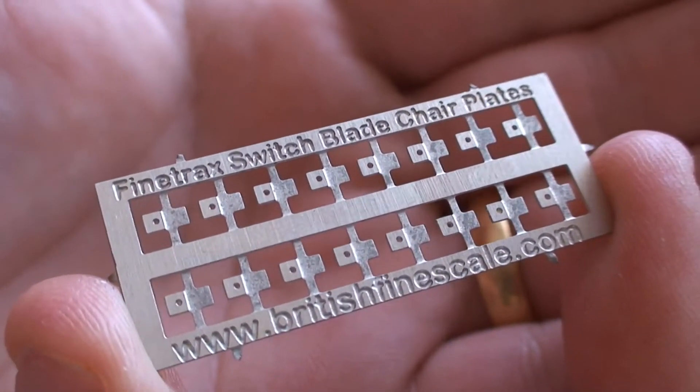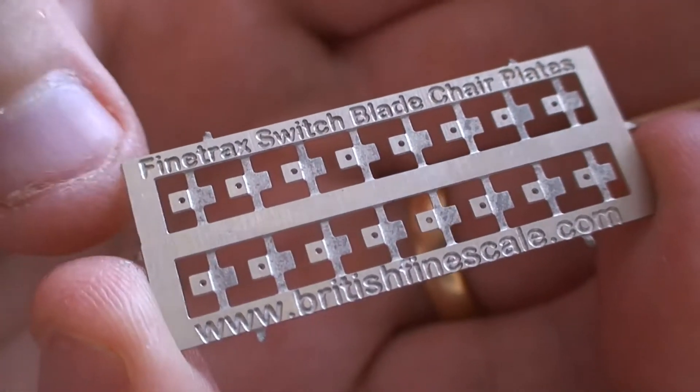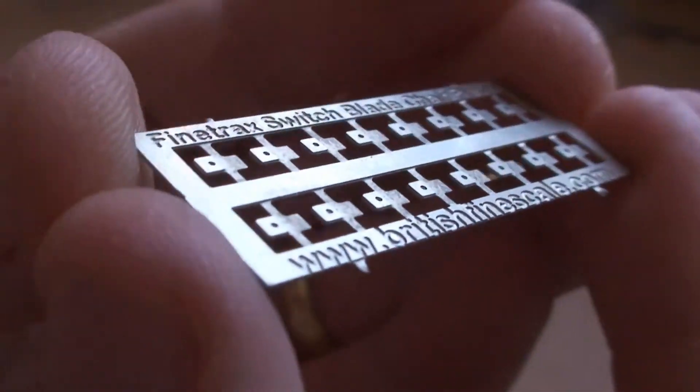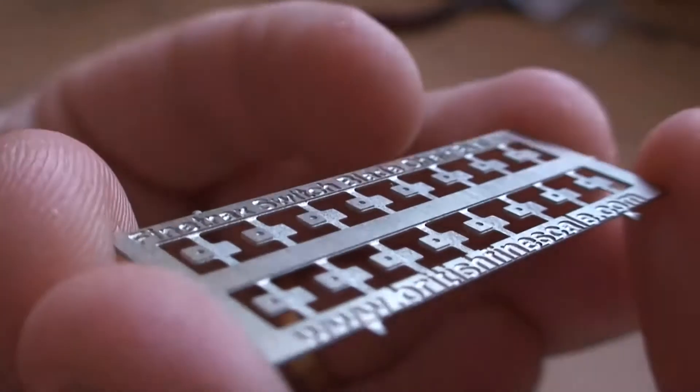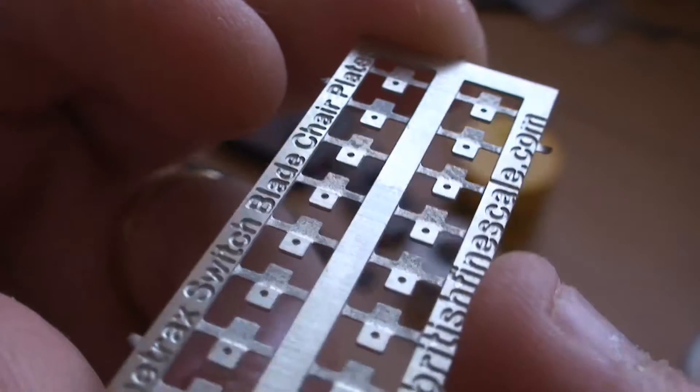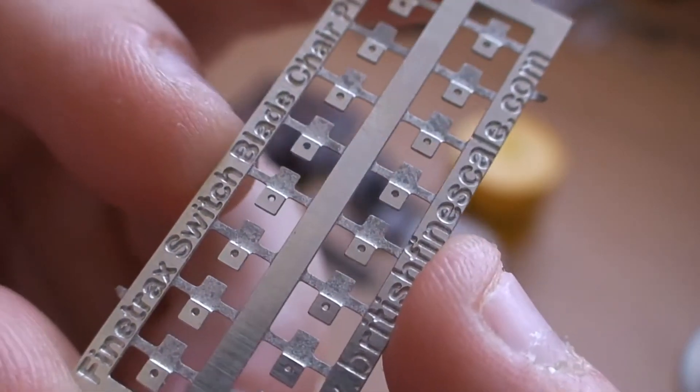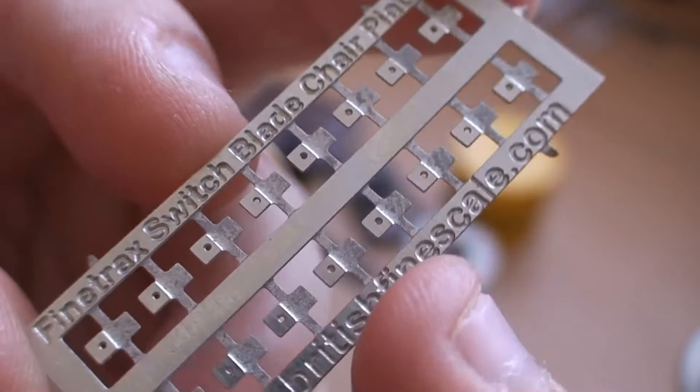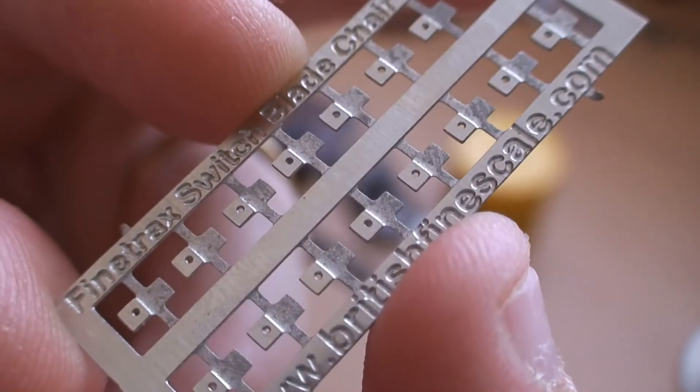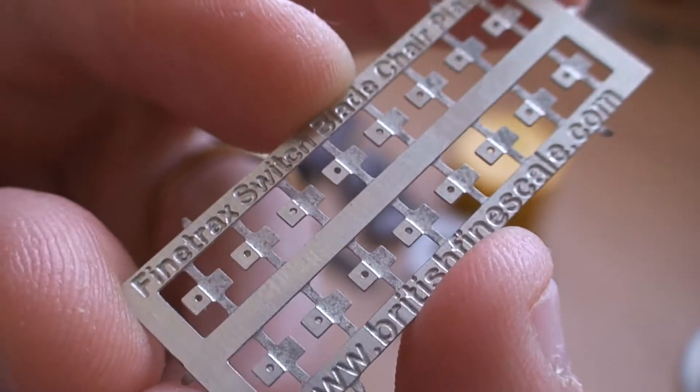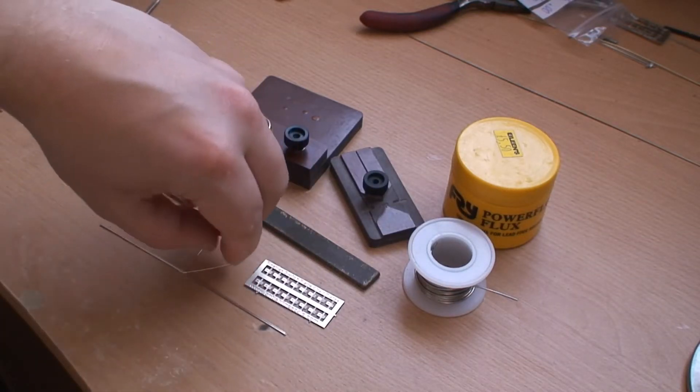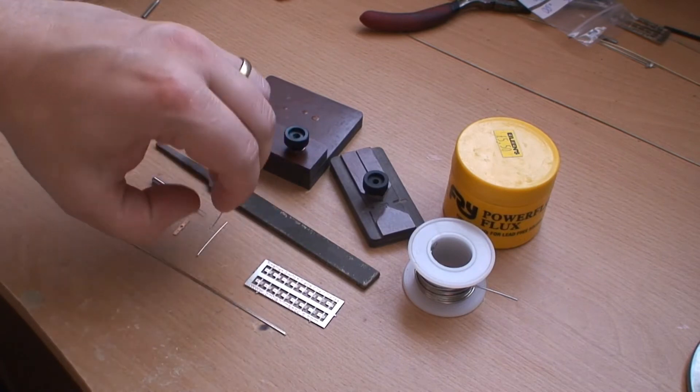You can see fine track switchblade chair plates, and there are sixteen there, so it's enough for eight turnouts. You would need two chair plates, one for each switchblade. These would actually be cut out of the etch. And as you can see, there's a little hole in each of them which will actually take a pin provided, which goes through that hole and also through a pre-drilled hole in the tie bar. The pins provided are 0.4 of a millimeter thick.